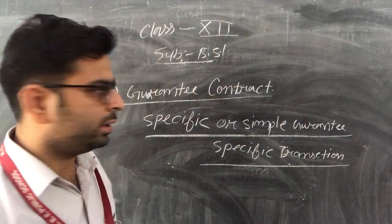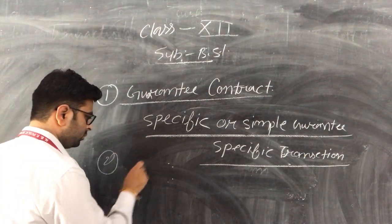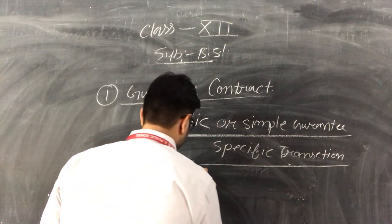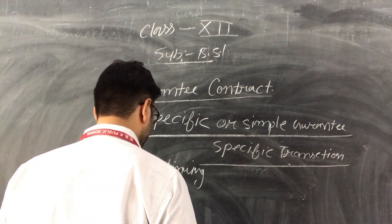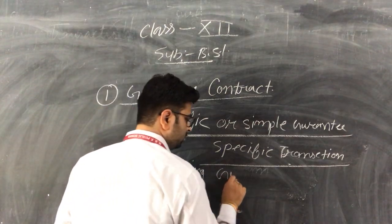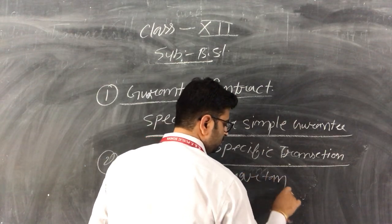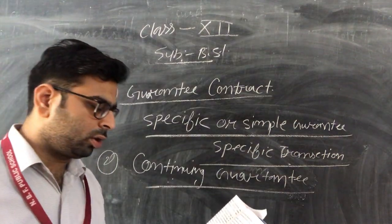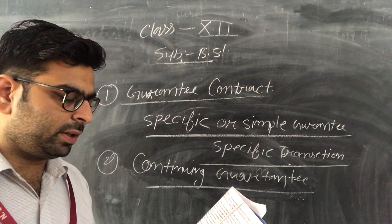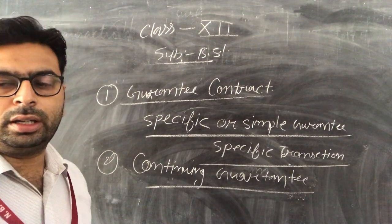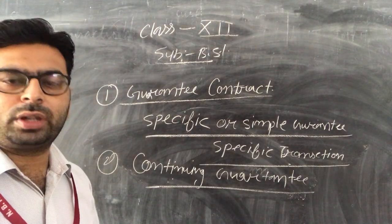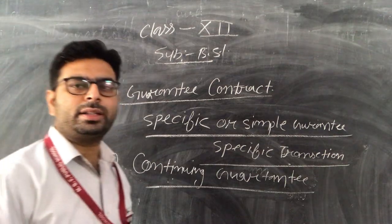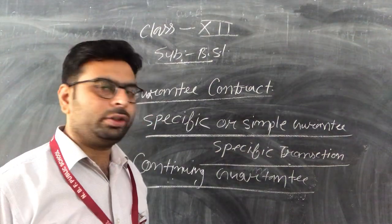The next is continuing guarantee. Continuing guarantee means a guarantee which extends to a series of deals or transactions — it is known as a continuing guarantee. That means the guarantee remains in place and will cover a series of transactions that you perform.